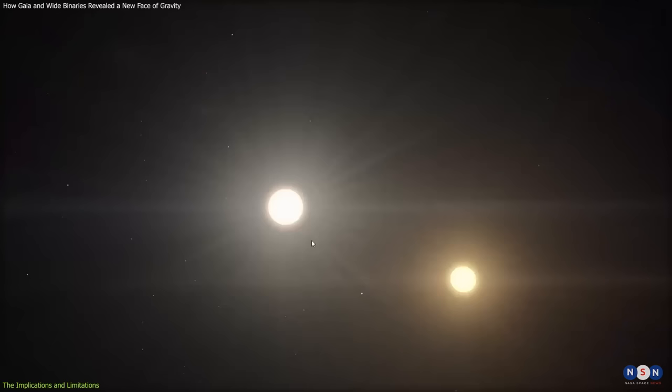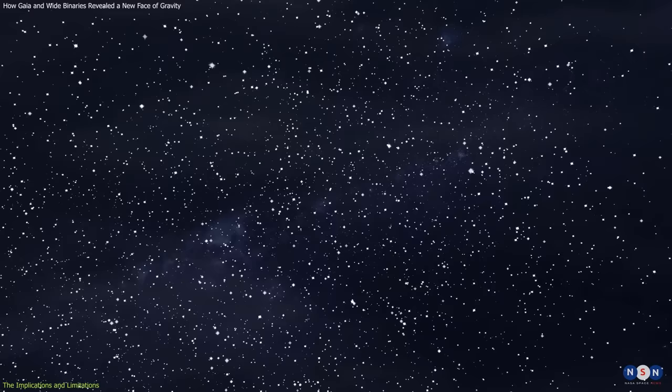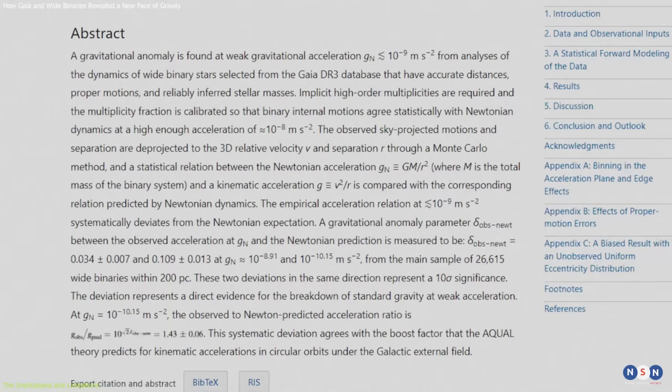For example, the study assumes that the wide binaries are randomly oriented in space, and that they are not affected by external perturbations or interactions with other stars or objects. These assumptions may not be valid for all cases and may introduce systematic errors or uncertainties in the analysis.